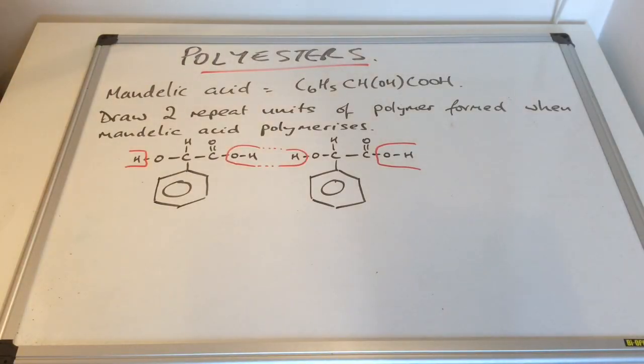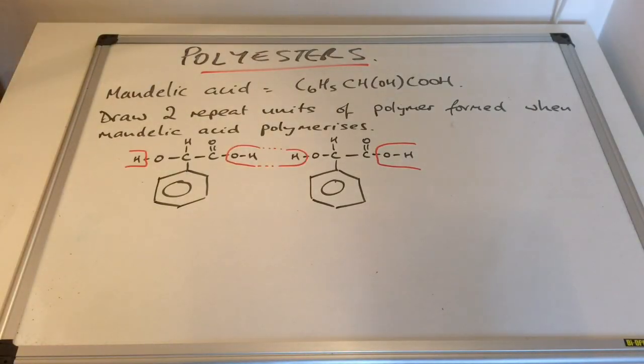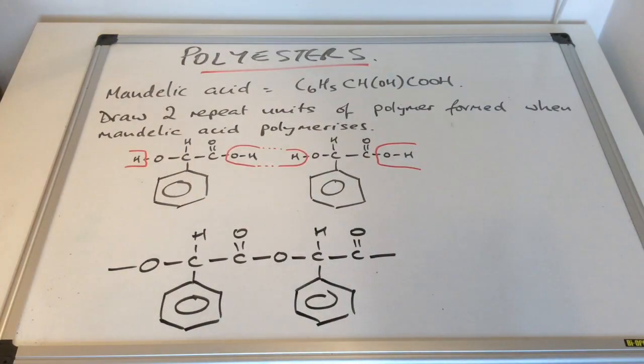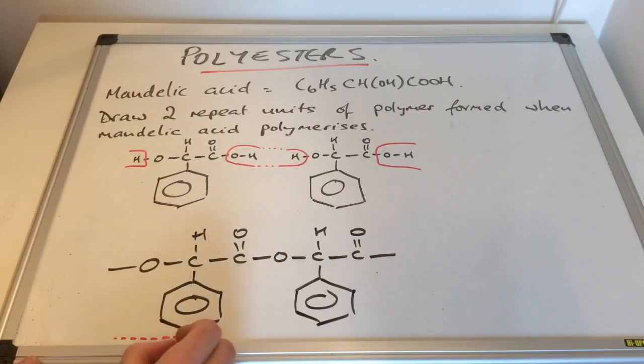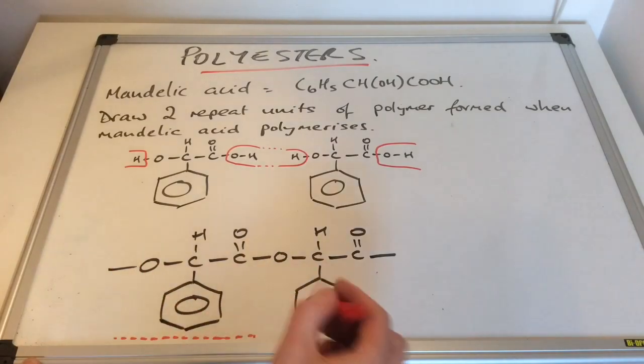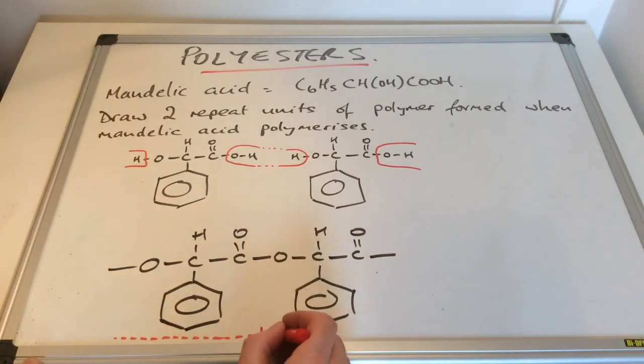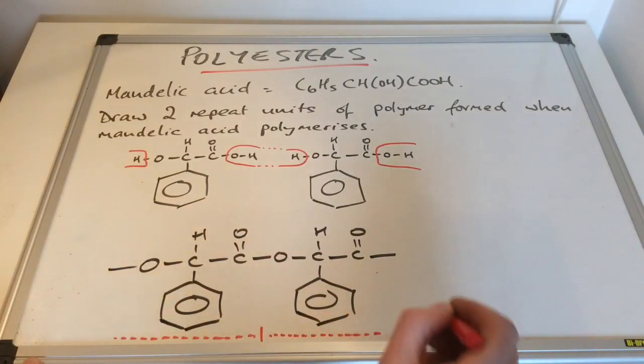So now we just need to turn that into the repeat unit. And remember we need two of them. And so there's the answer. And repeat unit number one would be here to there. And repeat unit number two you can see it picks up again with this single bonded OH. So there's repeat unit two starting there.